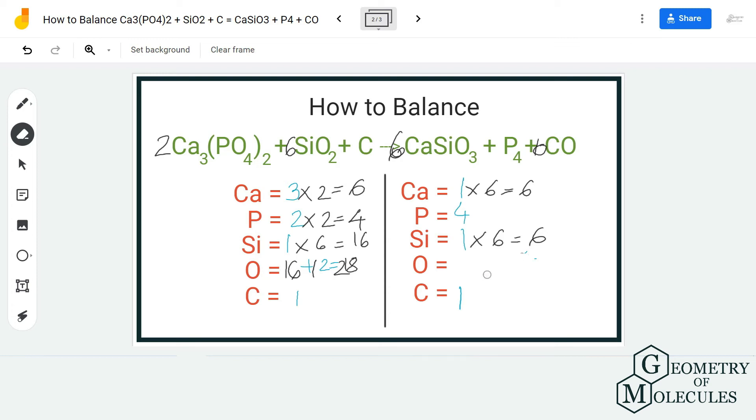Add a coefficient two on the reactant side. As I said, it is very easy to balance an element which is all alone. Do that and now you have same number of atoms for calcium, phosphorus, silicon, oxygen, and carbon.